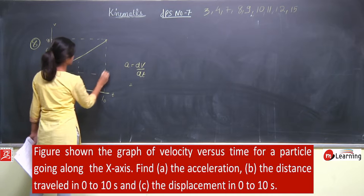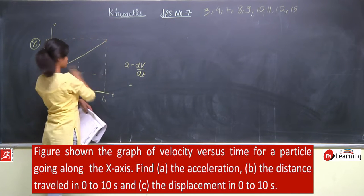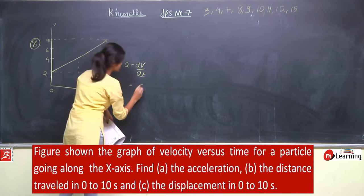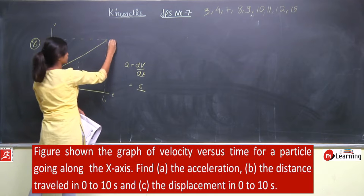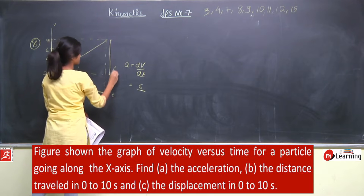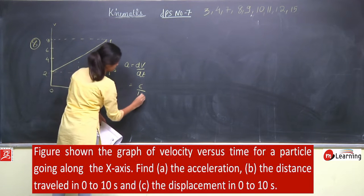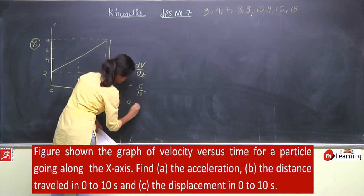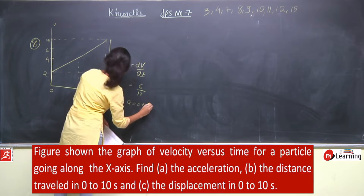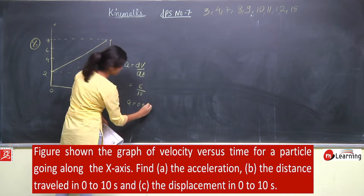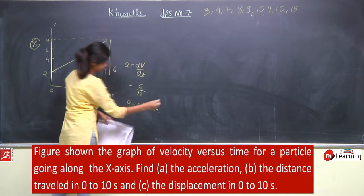Slope is y by x, मतलब 6 by 10 — this distance is 6 (that is 8 minus 2), और यह distance 10 होगा। So acceleration is 0.6 meter per second square.